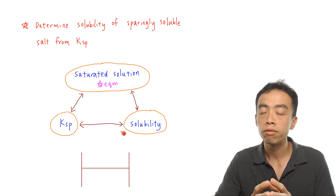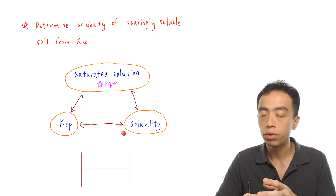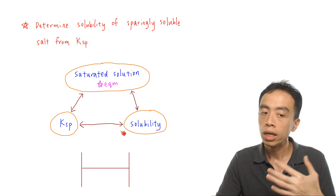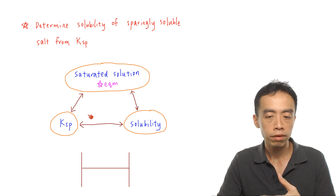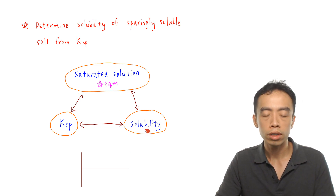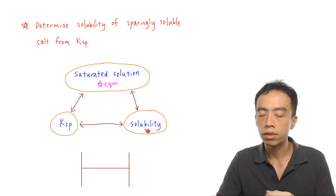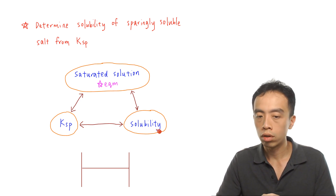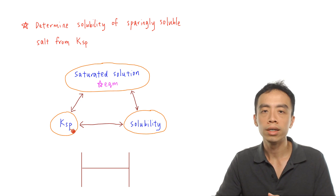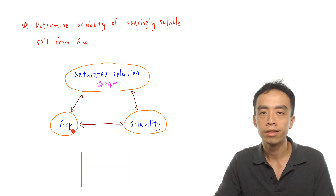If you have one value, you can find the other. If I have Ksp, I can find the solubility of the salt in water. And vice versa, if I have solubility, in principle I can also calculate Ksp.